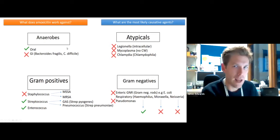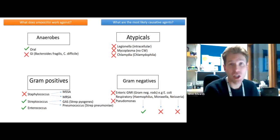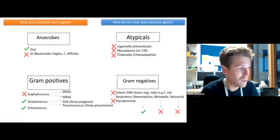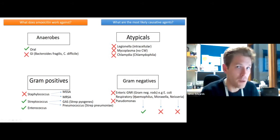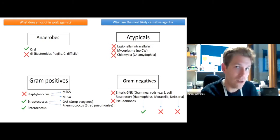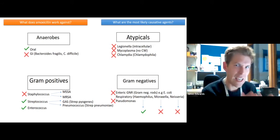Looking at it from a different angle — what are the most likely causative agents? In this case, the two overlap quite well. The most likely agents are pneumococcus and Haemophilus. Other respiratory organisms are really unlikely to be causing infection here, so we don't need to cover them. The goal is to focus the antibiotic to kill only those organisms most likely to be responsible.